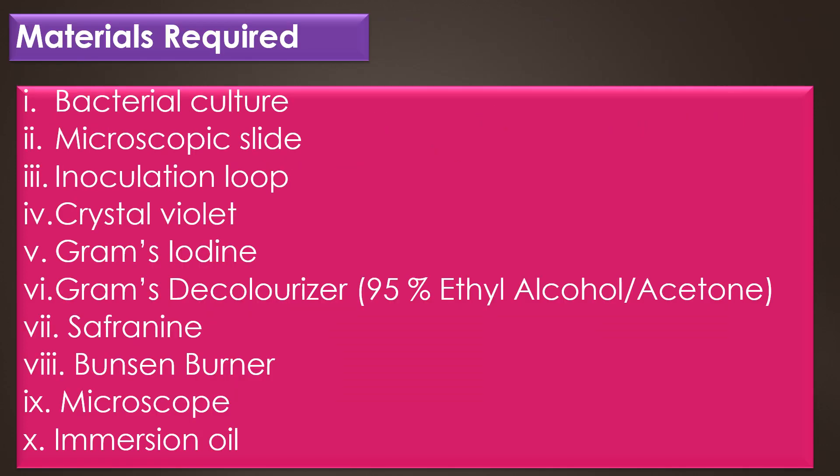The materials required for the gram staining technique are bacterial culture, microscopic slide, inoculation loop, primary stain crystal violet, mordant Gram's iodine, decolorizer Gram's decolorizer such as 95% ethyl alcohol or acetone, counter stain safranine, Bunsen burner, microscope, and immersion oil.